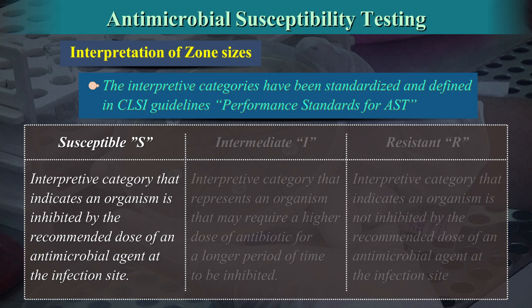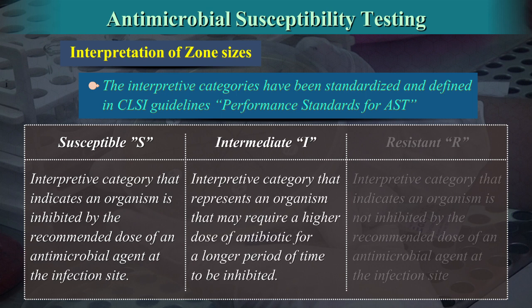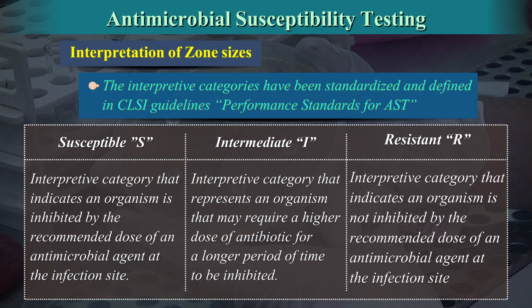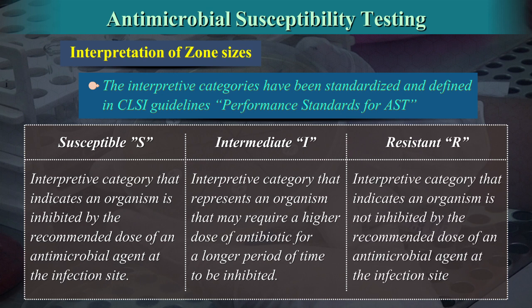Susceptible (S): Interpretive category that indicates an organism is inhibited by the recommended dose of an antimicrobial agent at the infection site. Intermediate (I): Interpretive category that represents an organism that might require a higher dose of antibiotic for a longer period of time to be inhibited. Resistant (R): Interpretive category that indicates an organism is not inhibited by the recommended dose of an antimicrobial agent at the infection site.